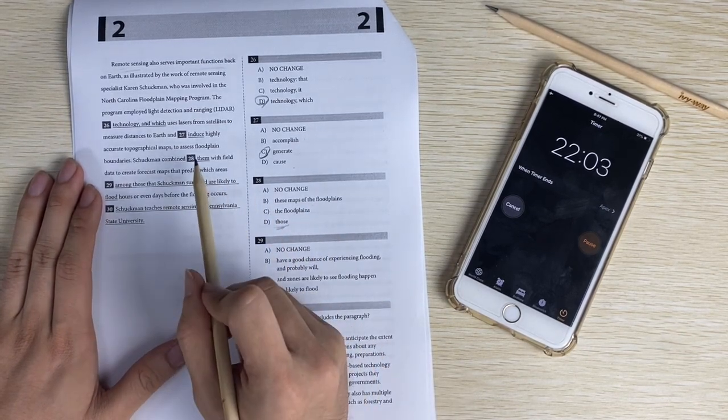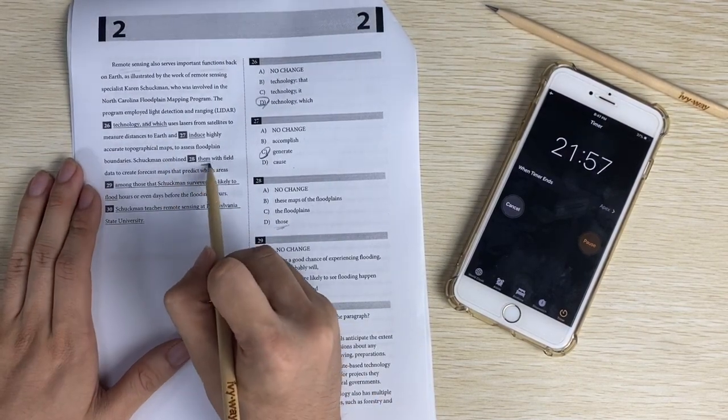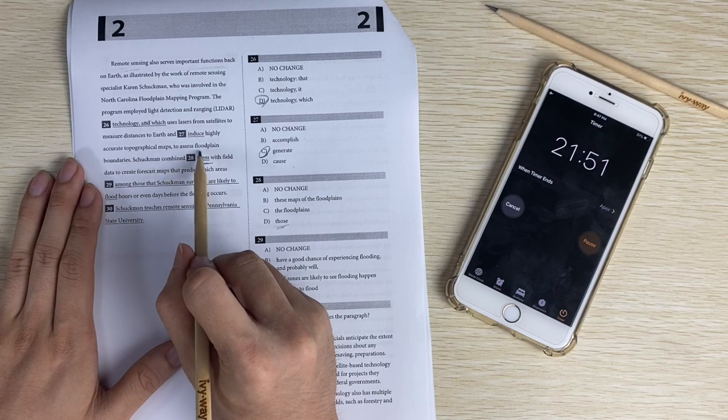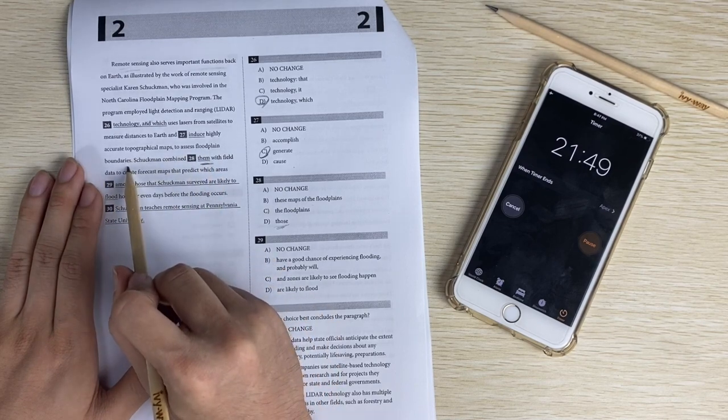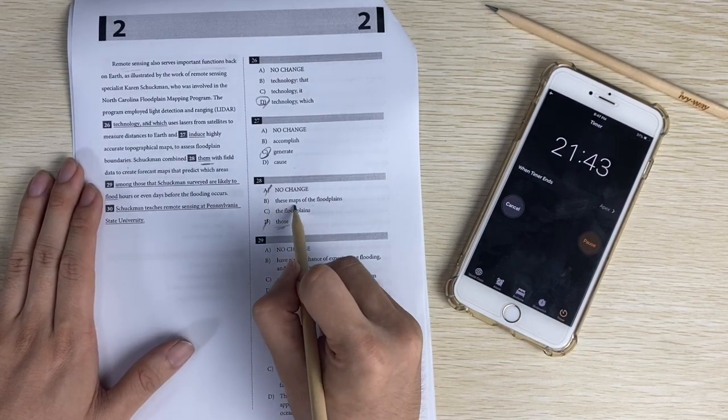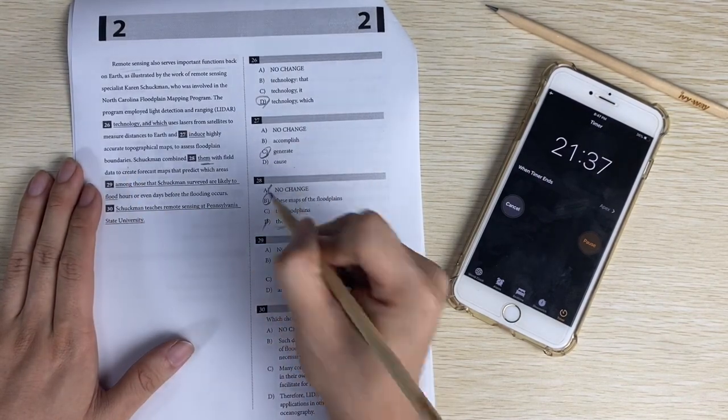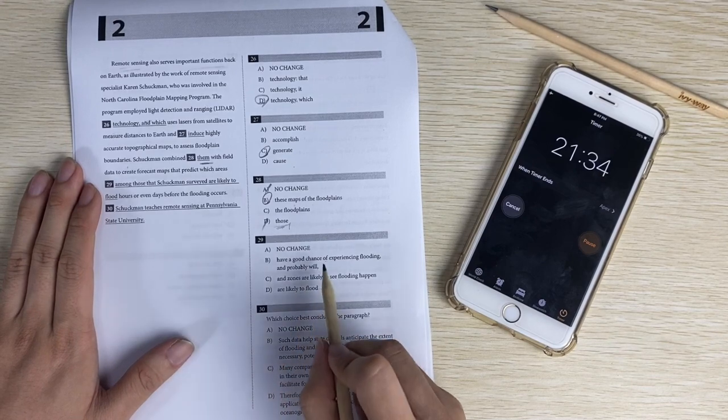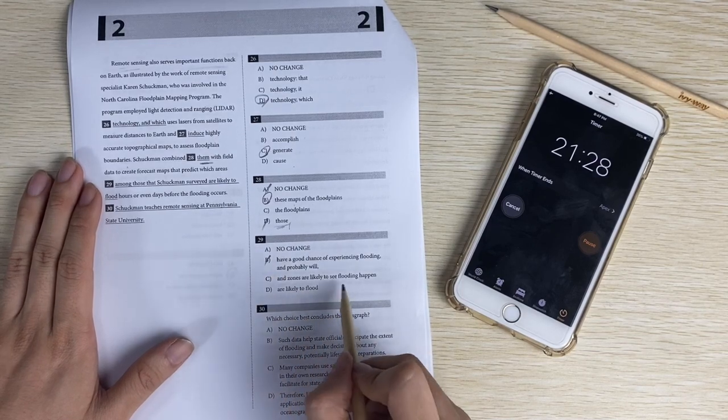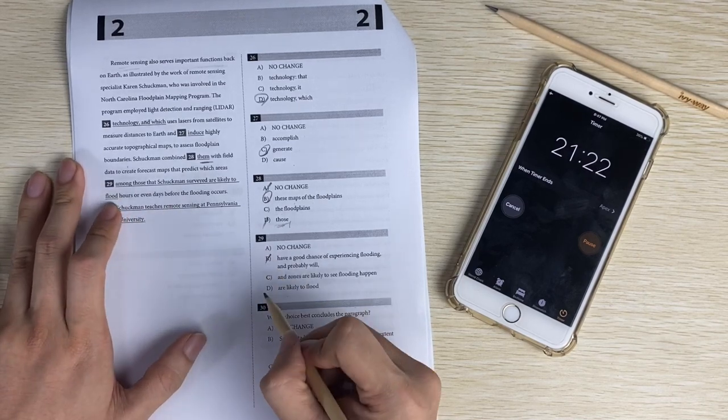Word choice question. To measure distance to earth and to generate maps. Should be to generate, to create maps. So should be that one. These maps of flat plane, so maybe pronoun. So look for combined them or those. That's a pronoun question. Combine them. So what is them? Measure to earth, highly accurate topographical maps to assess flat plane boundaries. Them is vague, and those are vague. These maps of flat planes refers to the maps. It doesn't talk about flat planes. So the answer is B. Twenty-nine, are have a chance. Floating probably will, so that's wordy. Zones are likely to see, are likely to flood. That's probably right because that's the most concise, and it is the most concise.